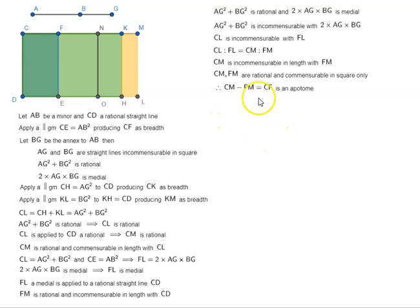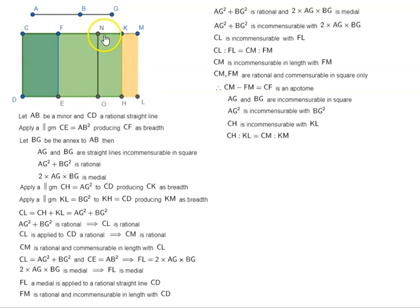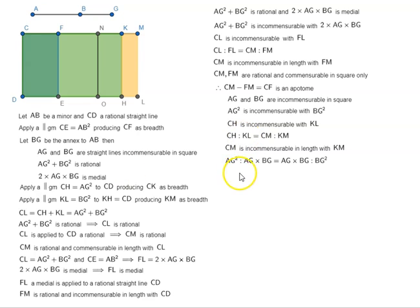Therefore CM minus FM, which equals CF, is an apotome. Now AG and BG are incommensurable in square, so AG² is incommensurable with BG², which means CH is incommensurable with KL. And since CH:KL = CM:KM, CM is incommensurable in length with KM. Now AG²:AG·BG = AG·BG:BG², which means CH:NL = NL:KL.